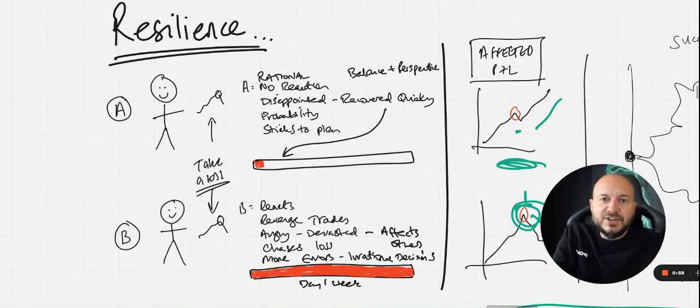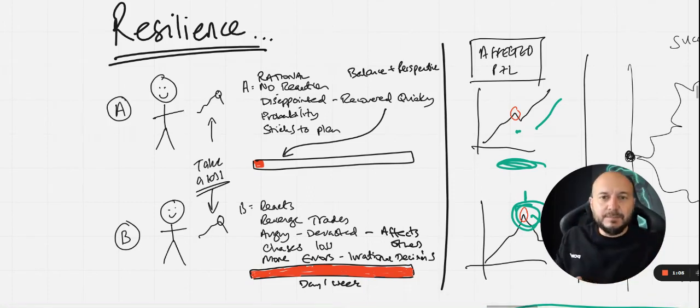So trader A is rational. They don't react, they respond. They have balance. They have perspective. Yes, they're disappointed that they've taken a loss, but they recover from that setback mentally very quickly. They understand or have a probabilistic mindset and they stick to their plan. They know they're going to take losses. That's just a loss. It's a cost of doing business. And they continue with their day or whatever they're on with.